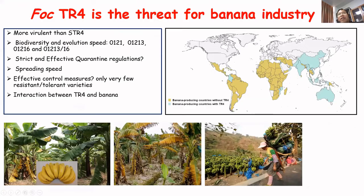We all know that TR4 is the greatest threat for the world banana industry. Comparing STR4, the sub-tropical race, TR4 is more virulent. It can outbreak in both tropical and sub-tropical regions. It includes four races: 0121, 01213, 1216, and also the complex 1316.